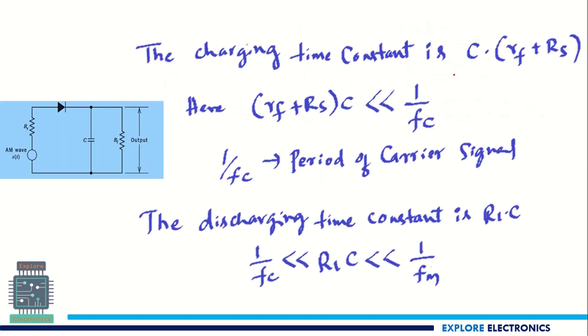And the charging time constant, that is (RF + RS) × C. Here RF is the diode forward resistance. RS is the limiting resistor what we have used. This (RF + RS) × C should be much less than 1/FC. So here 1/FC is the period of the carrier signal. So it should be much less than the carrier period.